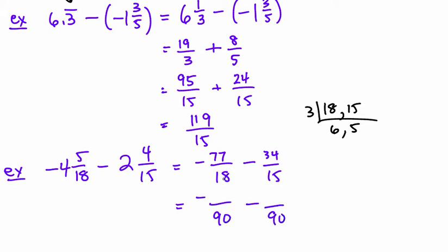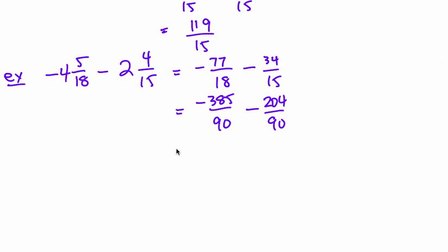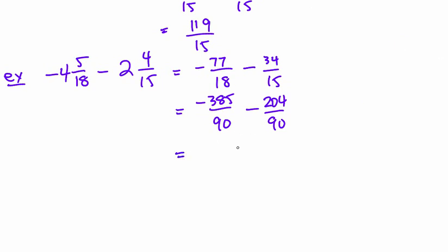This one multiplies by 5. So I need to do 77 times 5 on the side. 35, 35 and 3 is 38. 385. And I need to do times 6. So I need to do 34 times 6 over on the side. 18 and 2 is 20. 204. And these are on the same team. So I'll give myself a little bit of space here. And since they're both negatives, they just combine together. They're on the same team. 589/90.